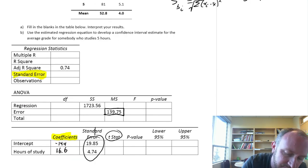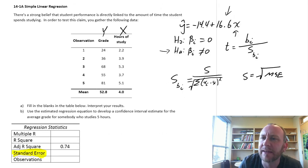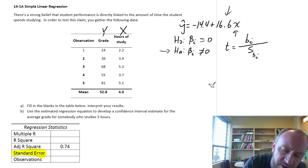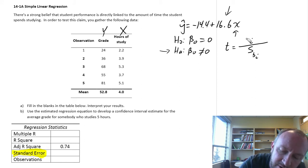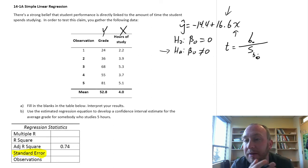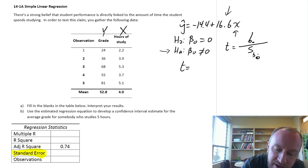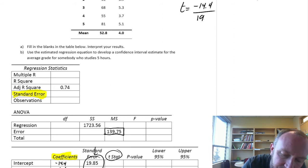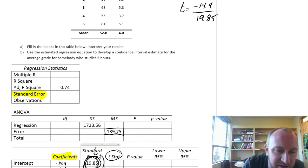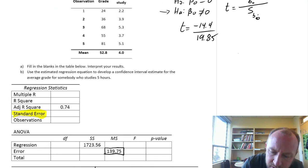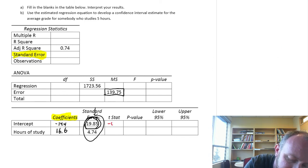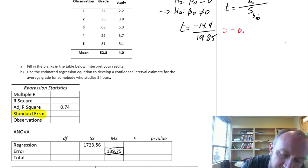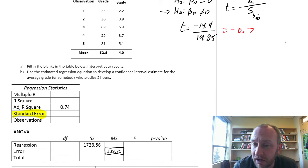Those standard error values we already have. Let's do our y-intercept first. Our hypothesis is for B₀, and the test statistic is the point estimate of B₀ divided by its standard error. Our point estimate is -14.4 and the standard error is 19.85, giving us a t-statistic of approximately -0.7. So that's our test statistic for the y-intercept.